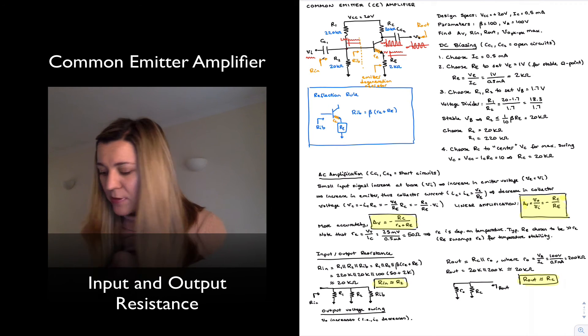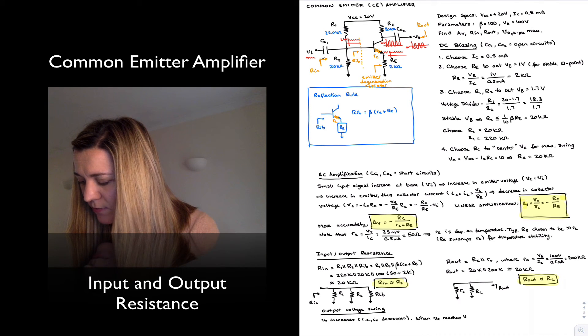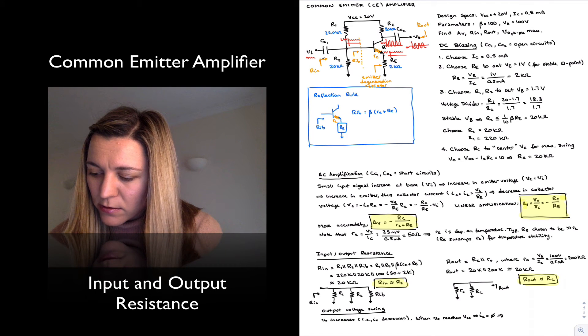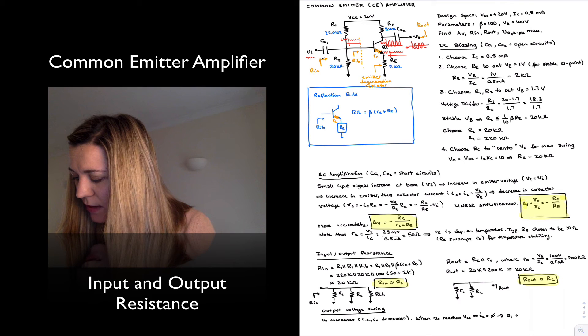And at that point, that would mean that there is zero voltage drop across RC, which means zero current flowing through RC. And if there is zero current flowing through the transistor, then the transistor is in cutoff. So that provides our upper limit for the voltage. So when Vout reaches VCC, that means IC is equal to zero, and therefore the transistor Q1 is in cutoff.